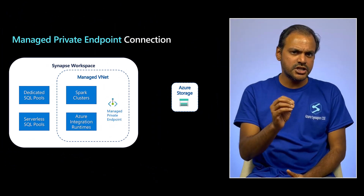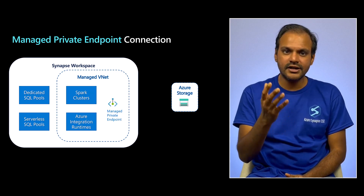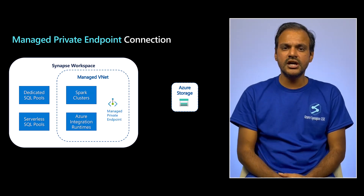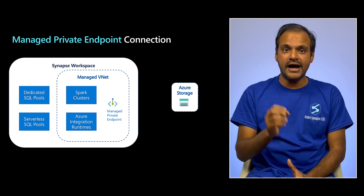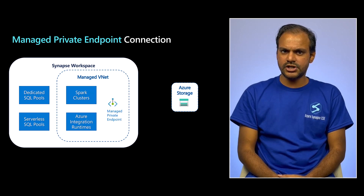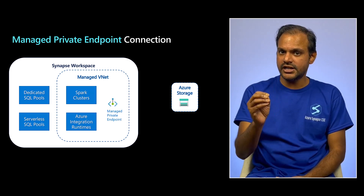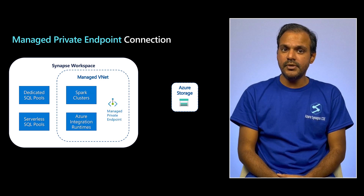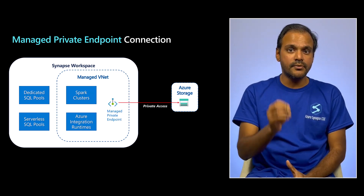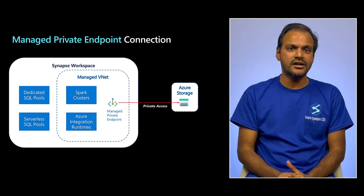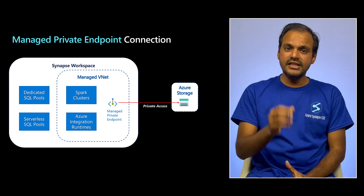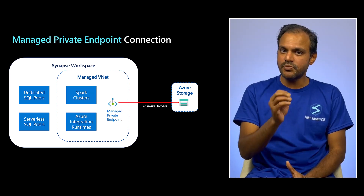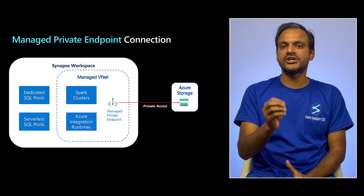Now let's look at another interesting concept called managed private endpoint connections. In the first video in the series, we saw that Apache Spark pools and Azure integration runtimes can be deployed inside the managed VNet if you enable them. Outbound connections from the managed VNets to certain Azure data sources which support private endpoints, such as storage accounts and databases, can be made to go privately — entirely within the Microsoft backbone network without traversing the internet — with the use of managed private endpoints. These managed private endpoints provide secure and private outbound connectivity for Apache Spark pools and Synapse pipelines that use Azure integration runtimes.